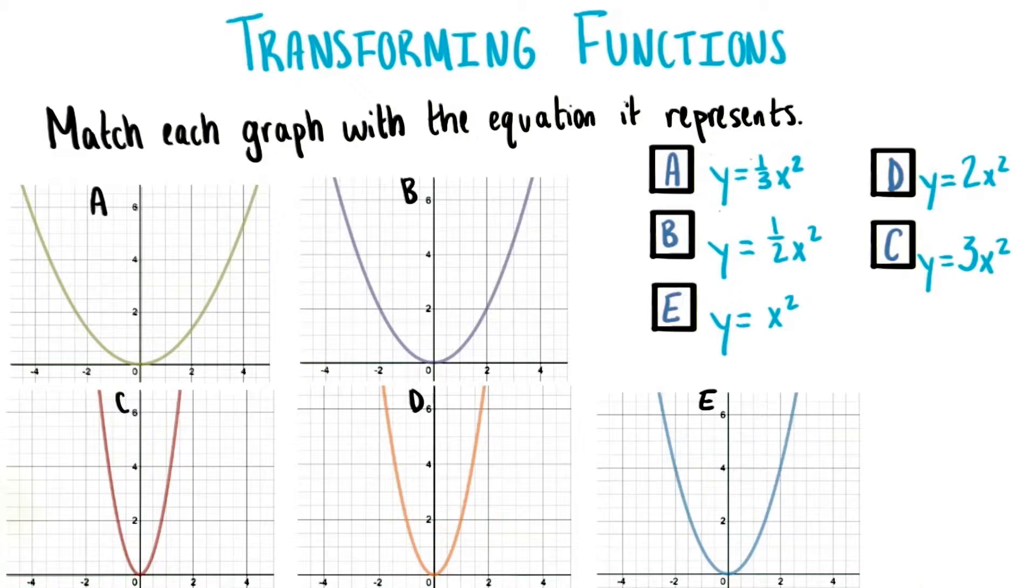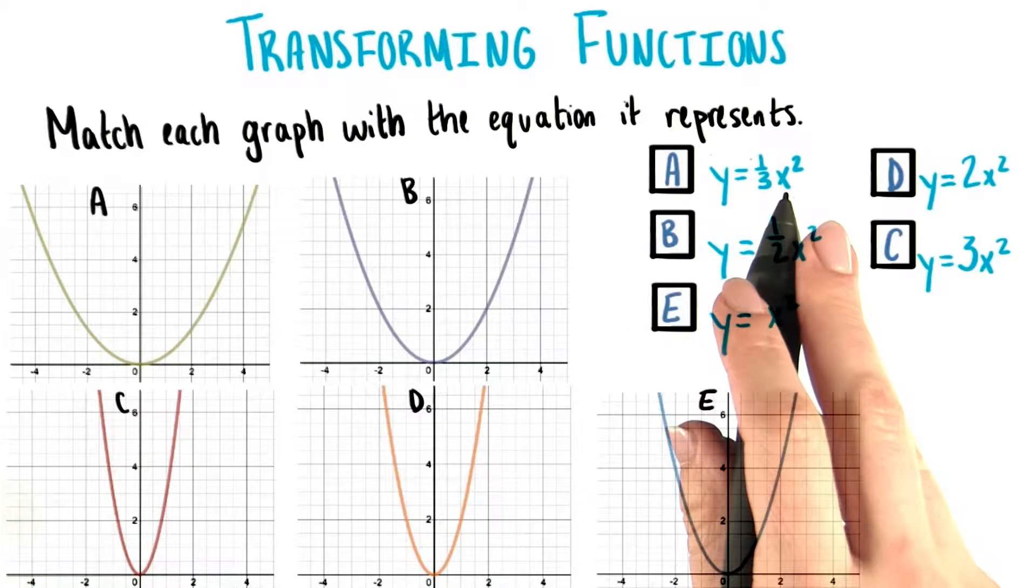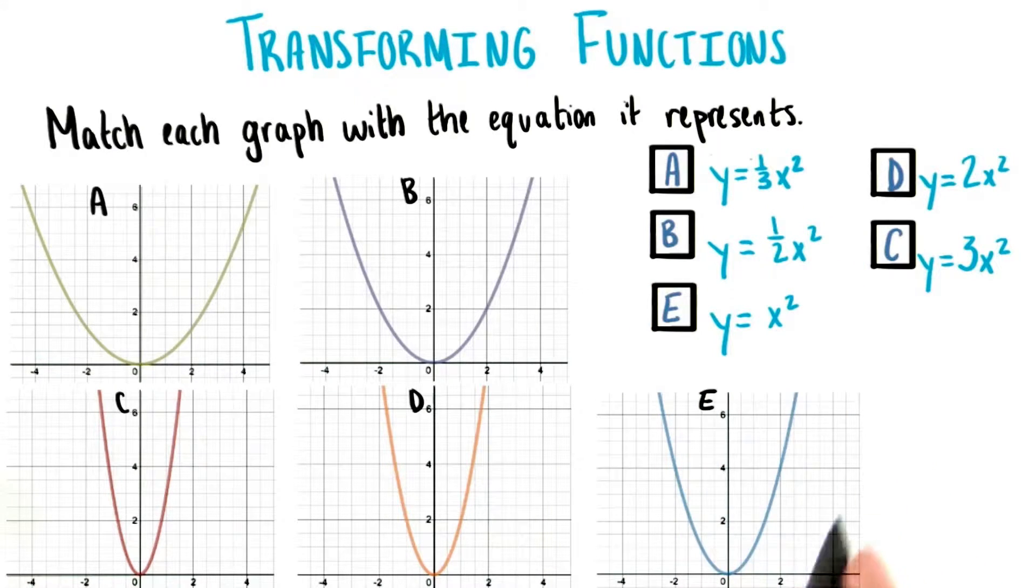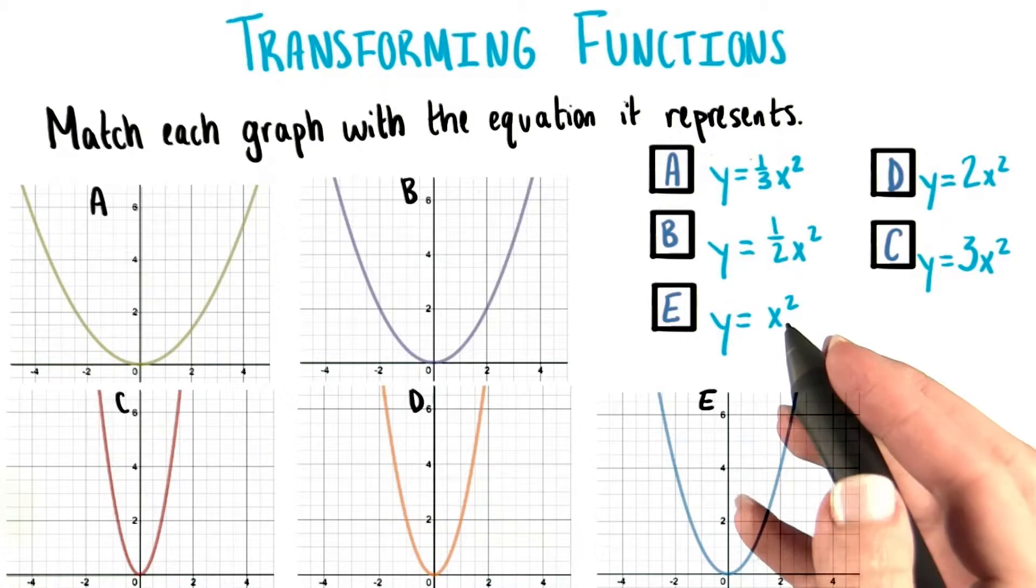Changing this coefficient changes what the y value is going to be for any given x value. Graph E down here is our parent parabola, y equals x squared.